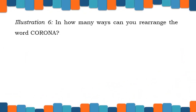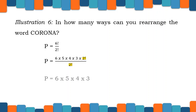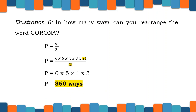Let us consider illustration 6. In how many ways can you rearrange the word Corona or C-O-R-O-N-A? We have P equals 6 factorial all over 2 factorial, since we have identical objects which is O. Then we have 6 times 5 times 4 times 3 times 2 factorial all over 2 factorial. We cancel out 2 factorial from numerator and denominator, so we have 6 times 5 times 4 times 3, and our final answer will be 360 ways.